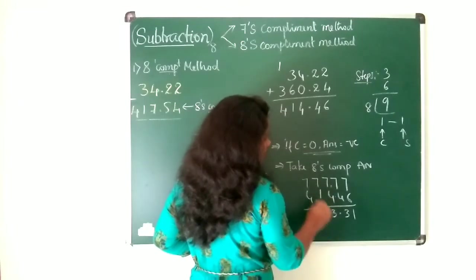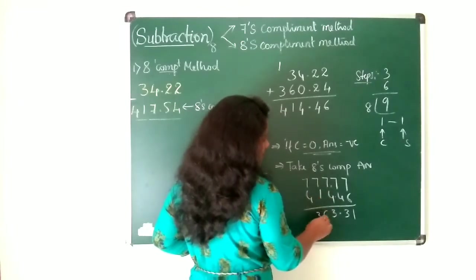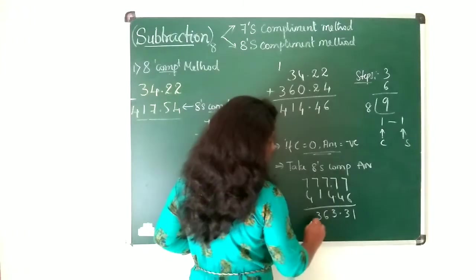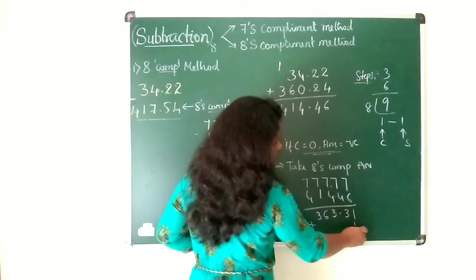7 minus 1 is 6, 7 minus 4 is 3. And then add 1 to it to get the 8's complement value.